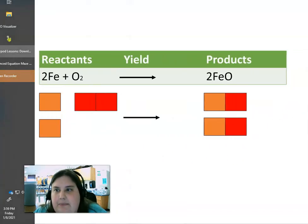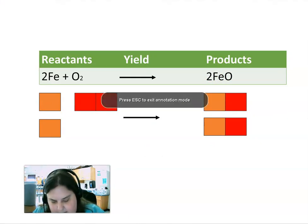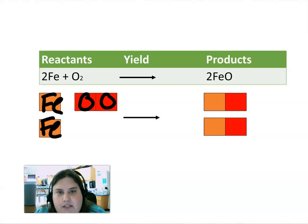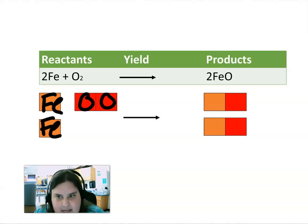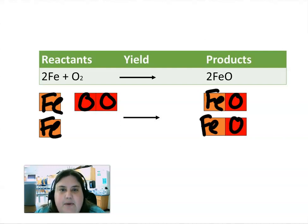Let's look at another example. I have 2 FeO2 plus O2 for my reactants, so I start out with two atoms of Fe and two atoms of oxygen. When I move that over to the product side, I should still have two atoms of Fe and two atoms of oxygen. It's rearranged and looks different, but I still have the same number of atoms for each of those two elements.